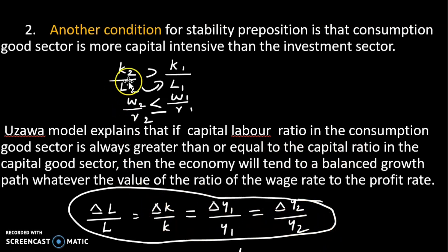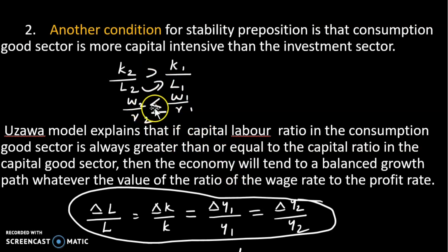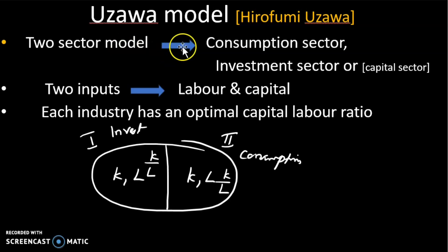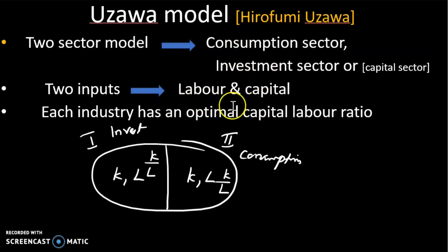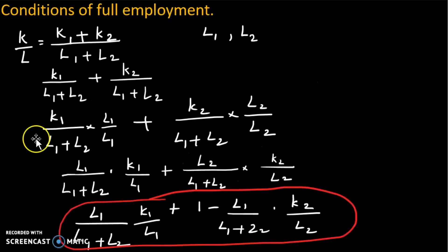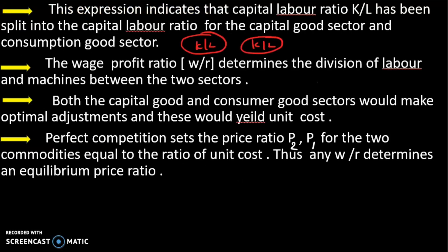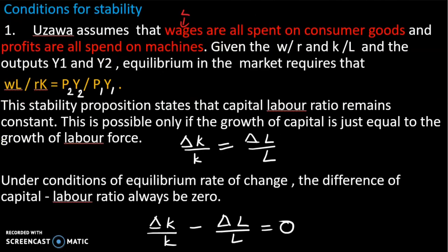We will now review two conditions and the important equations. The model has: the two-sector structure with two inputs, the assumptions including free factor transferability, the full employment conditions, and the stability conditions.